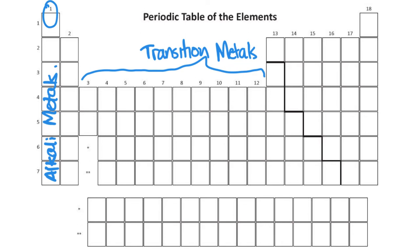Okay, and then if we take a look at group 17, these are our halogens. Group 18 is our noble gases.